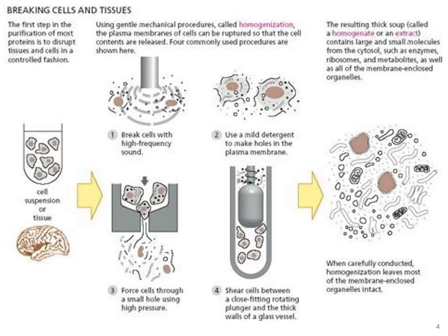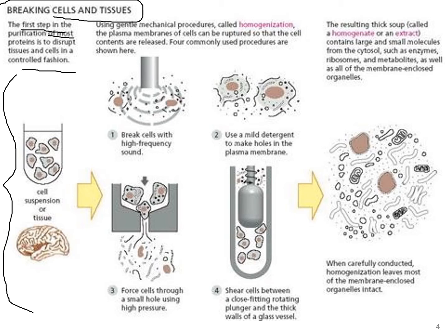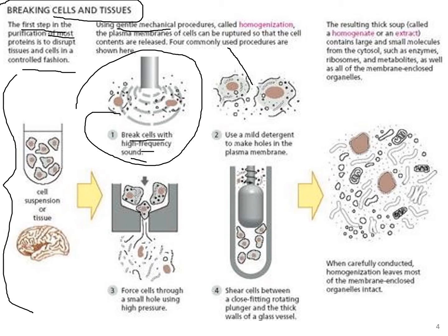Now let's talk about the basics of how cell disruption takes place. The first step in purification of most proteins is to disrupt tissues and cells in a controlled fashion — breaking cells with high-frequency sound using machines such as sonicators. The second step involves using gentle mechanical procedures called homogenization to disrupt the plasma membrane.